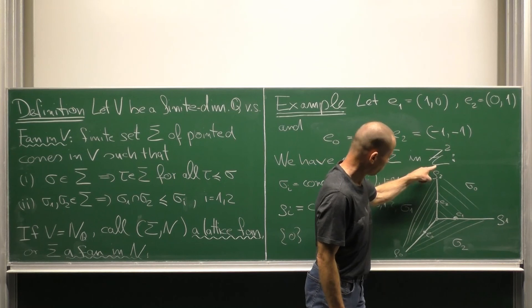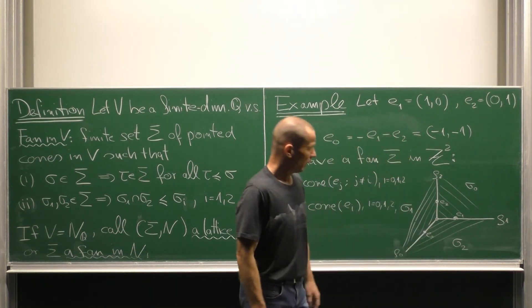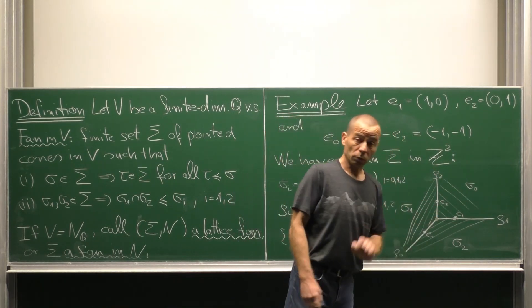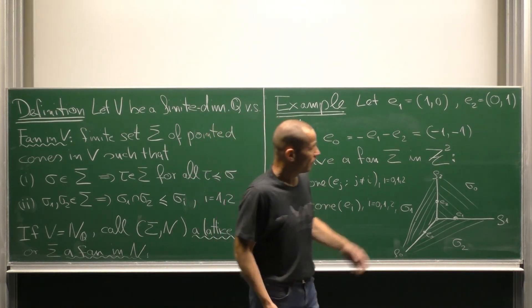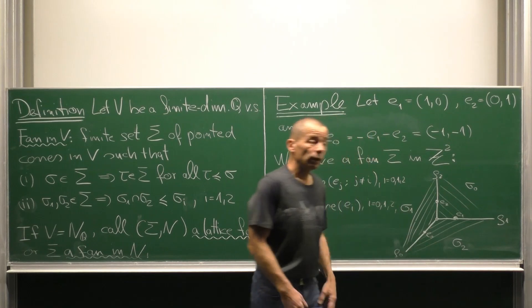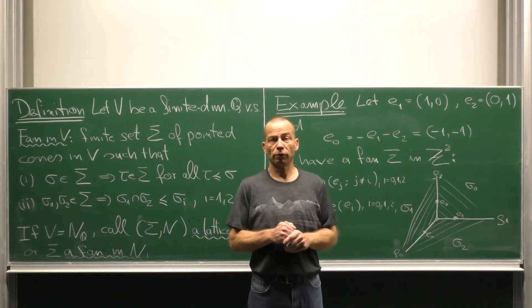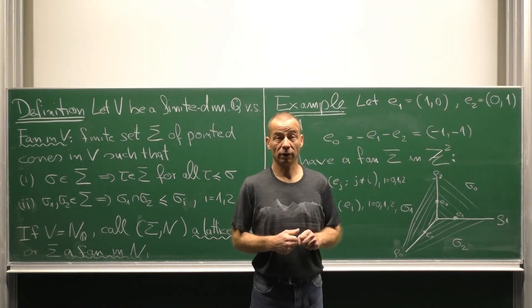That means the rays, rho1, rho2, rho0 and the zero cone. If we proceed like this, we directly see that the cones intersect nicely in common faces, so we have a fan in Z2.